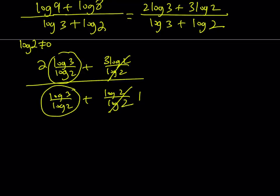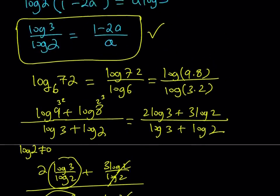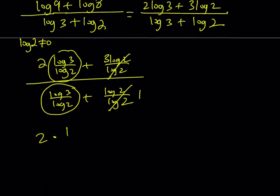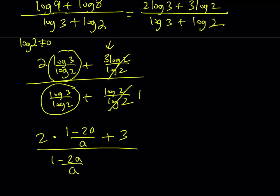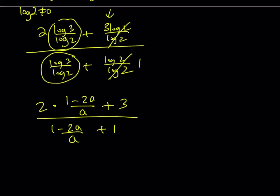So, from here, the original expression that I have can be written as 2 times. Now, what is the ratio log 3 over log 2? That is 1 minus 2a over a, right? Plus 3, this 3 right here. And then, that is divided by, this expression again comes up, 1 minus 2a over a, plus 1. So, this is what I'm trying to find. Let's go ahead and simplify this.